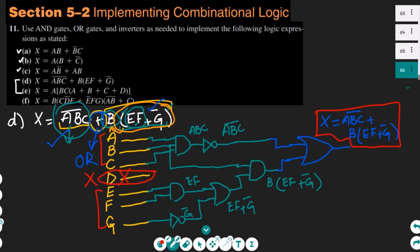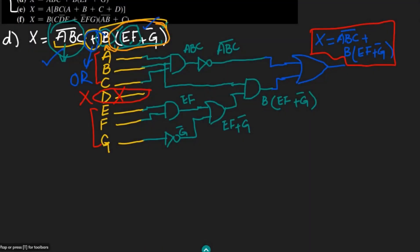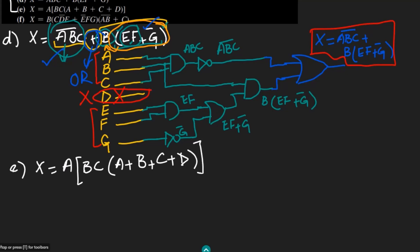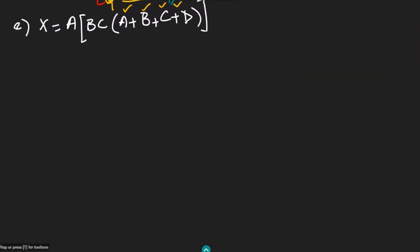Similarly, for part E. The expression is x equals a multiplied by b·c, multiplied by (a plus b plus c plus d). The first step is to see how many inputs we have — the number of inputs is 4: a, b, c, and d. Let me draw those four input lines here: a, b, c, and d.